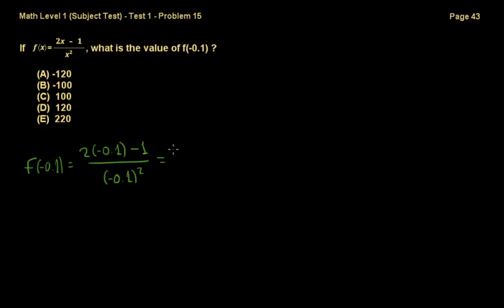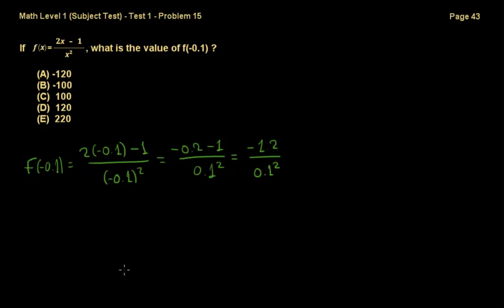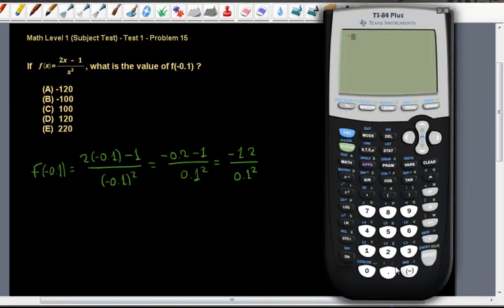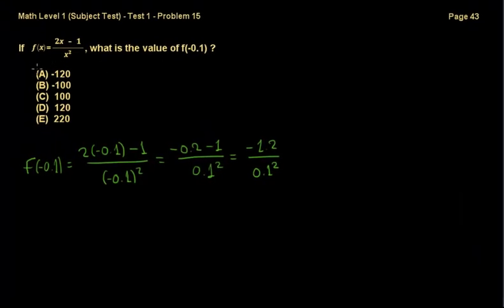So how much is that? Well, that is −0.2 minus 1 — remember we just substituted −0.1 wherever x was — over 0.1 squared. And that's the same as 0.1 squared because squaring something always gives a positive number, so the sign doesn't matter. So that is −1.2 over 0.1 squared. Using a calculator, that is −1.2 divided by 0.01, which gives −120. The correct answer is A.